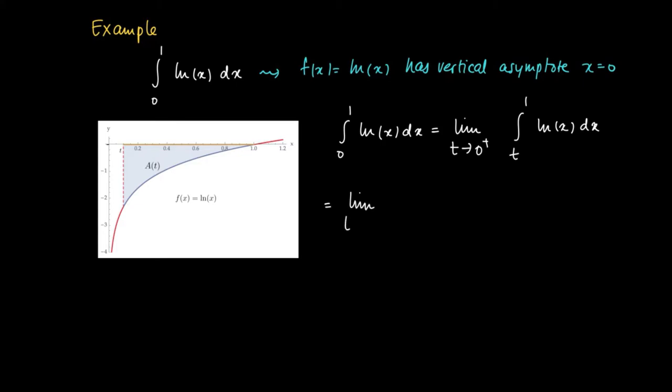The primitive is easily found using partial integration by parts. We find that the primitive is given by x ln x minus x.